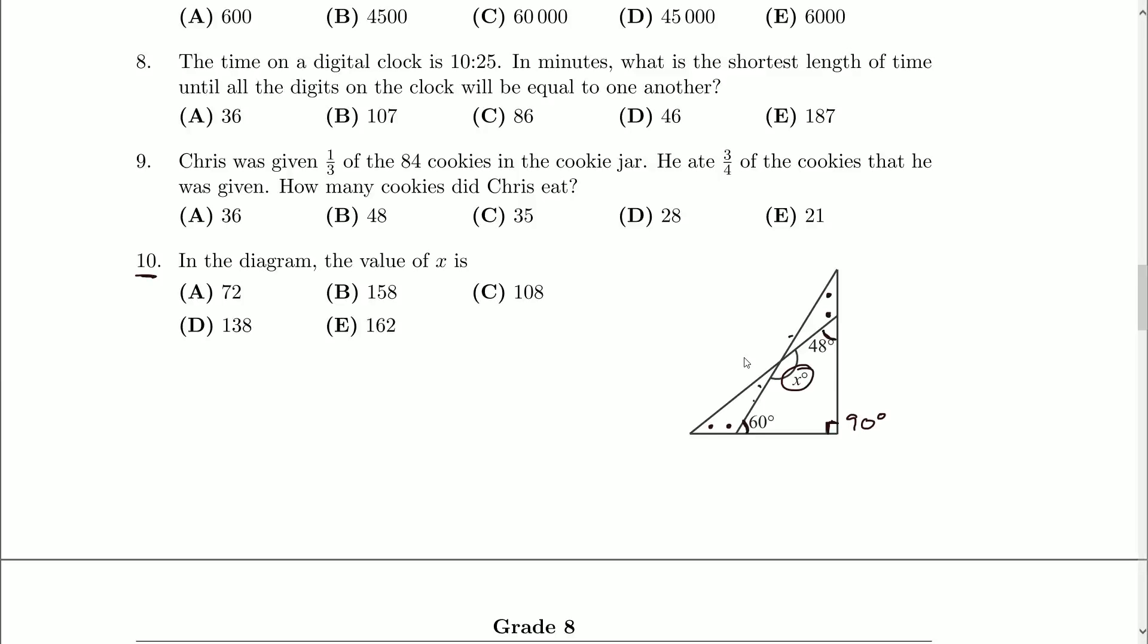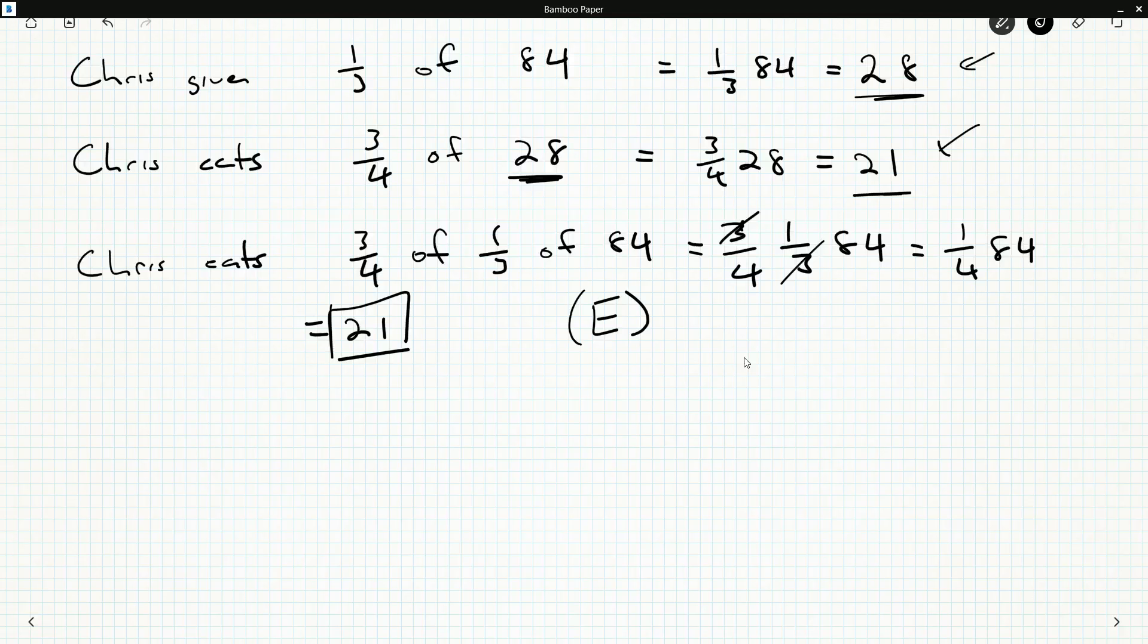But the easiest thing to do is probably just point out that we've got a quadrilateral here, and you might know that the sum of the angles inside a triangle is 180. Well, the sum of the angles inside a quadrilateral is going to be 360.